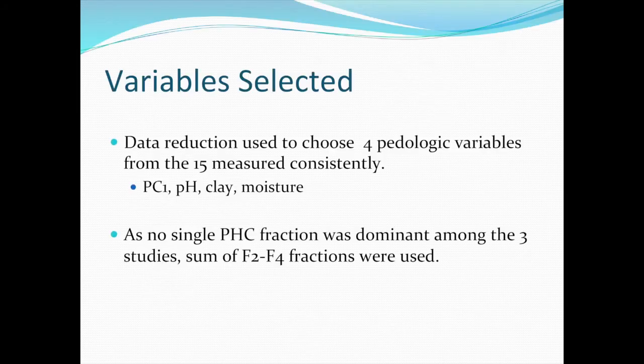That single principal component describes 55% of the total variability in the data set — across 15 non-contaminant variables. By creating that one synthetic variable I can describe 55% of the non-contaminant variability. Subsequent principal components described 25% and 10%, but the second and third were not interpretable. However, looking at the loadings, clay, pH, and moisture kept coming up prominently. So when I did my data reduction, I chose the first principal component, pH, clay, and moisture as explanatory variables and ignored the remaining 12 variables.